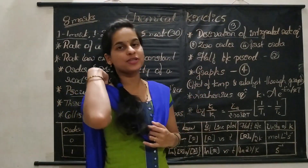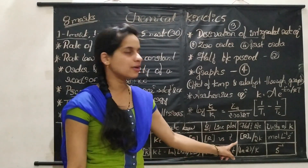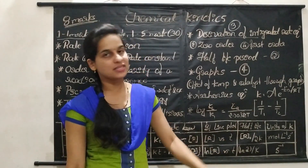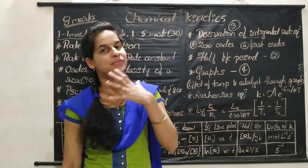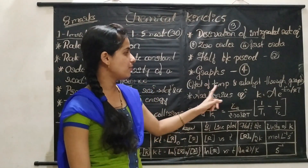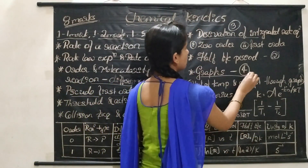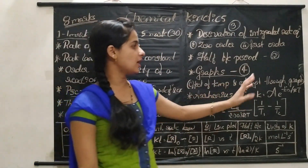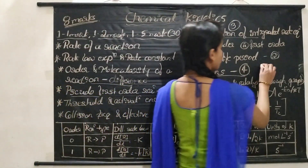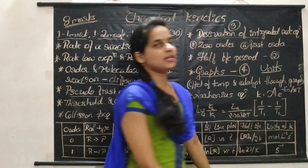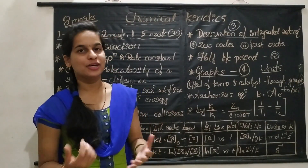One two-mark numerical may be asked for the half-life period of a reaction for zero order and first order. Next, important topics from this chapter: graphs. There are four important graphs. The first is the graph of concentration of R versus T for zero order reaction. The graph of ln R versus T for first order reaction. And another two very important graphs which explain the effect of temperature and catalyst. For two marks or sometimes three marks, the effect of temperature and catalyst through graph may be asked.